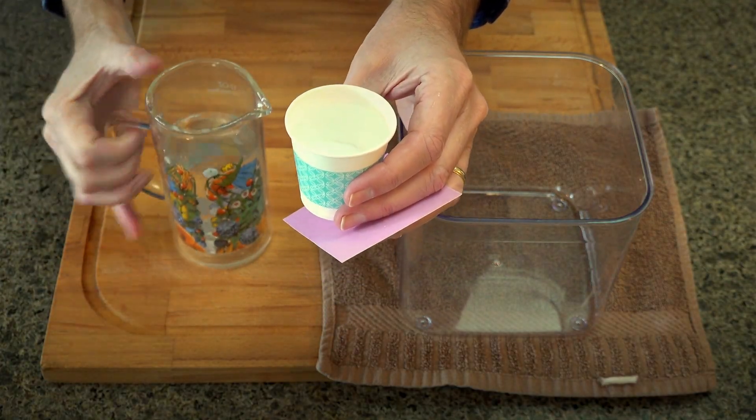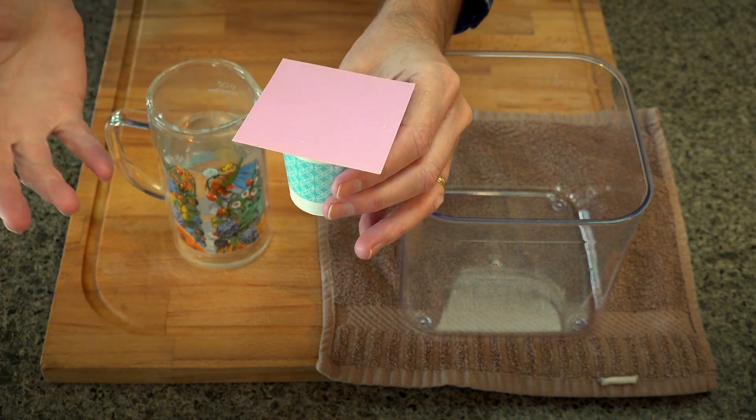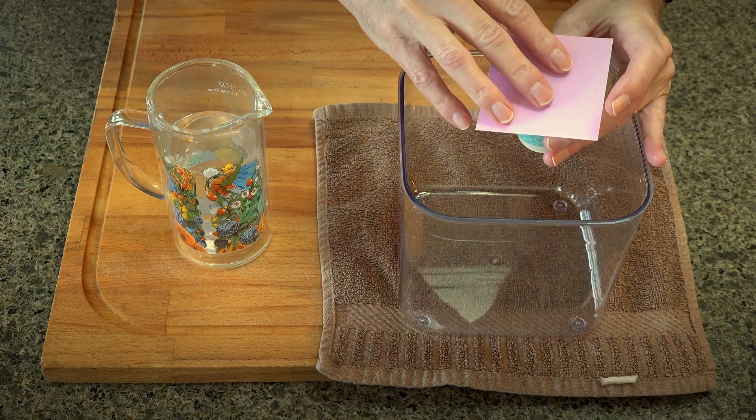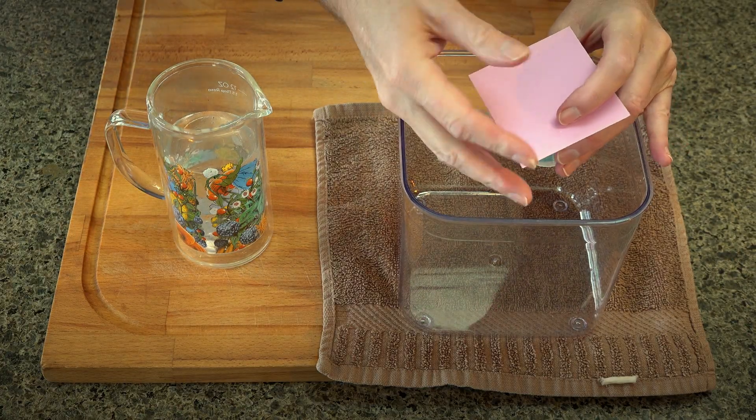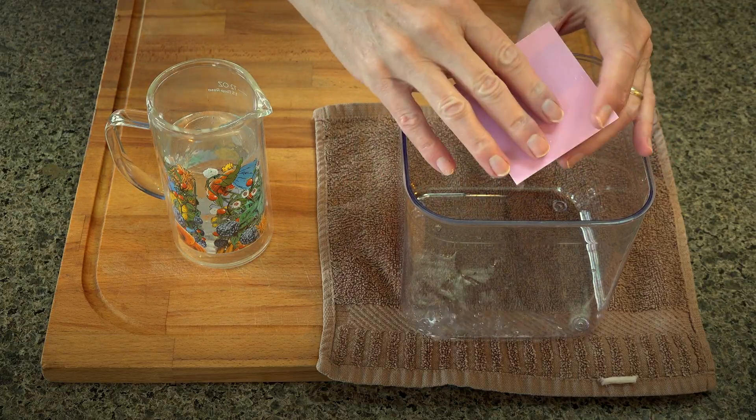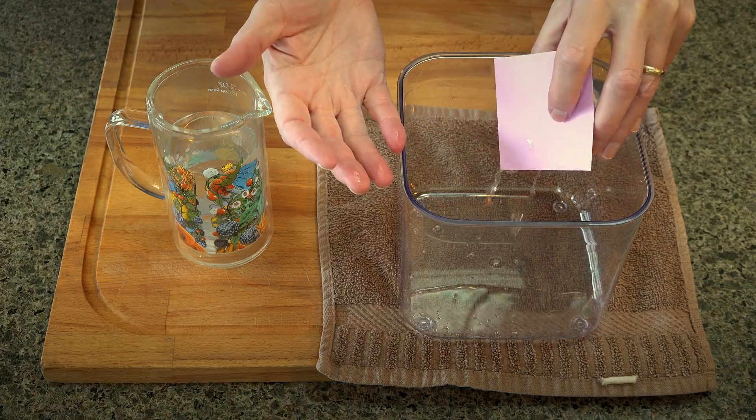Place the card on top of the cup so you can't see the water. Next, working within the tub, your goal is to find a way you can turn the cup upside down and the water doesn't come out.